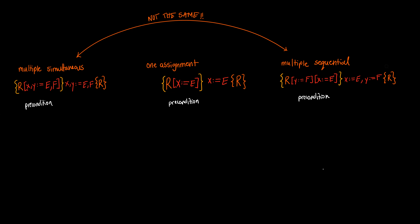There are a few different ways to calculate valid preconditions if you're given an assignment and the postcondition of a Hoare triple. Typically you'll see something with one assignment, meaning we're only assigning one variable. In the normal format of a Hoare triple, you have a precondition, a statement being executed, and a postcondition. If you begin in a state where your precondition is satisfied and you execute the statement, you will terminate in a state where the postcondition is satisfied.